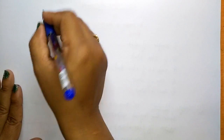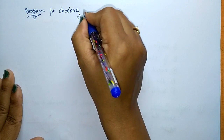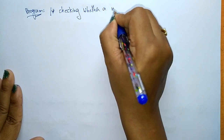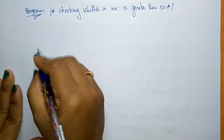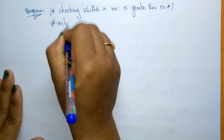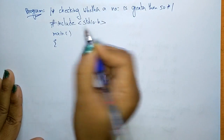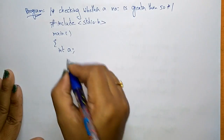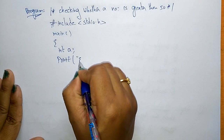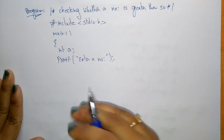Now let me write the program. I am writing a program for checking whether a number is greater than 50 or not. I write: #include <stdio.h>, then the main program. I declare one variable: int a — 'a' is a variable of data type integer. Then printf: 'Enter a number' so the user enters a number from the keyboard.